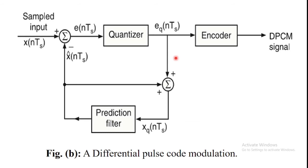XQ(nTs) is the quantized output signal and the previous prediction value. The quantized output value adds with the previous prediction value X̂(nTs) and gives the input to the prediction filter. So, from this block diagram, XQ(nTs) = EQ(nTs) + X̂(nTs).